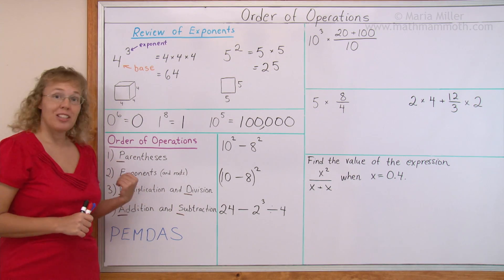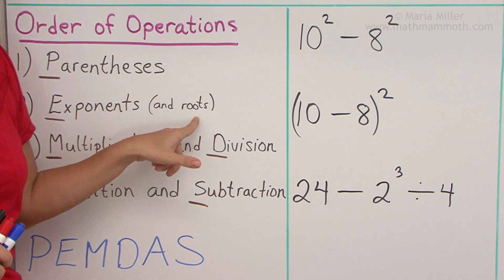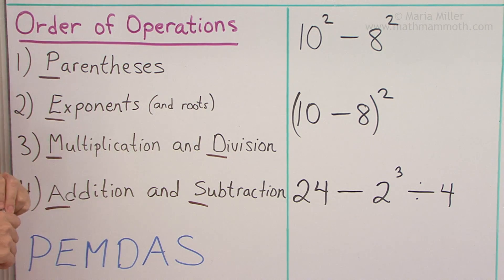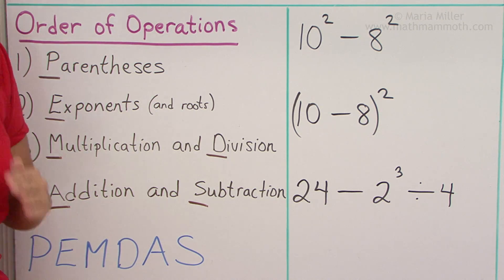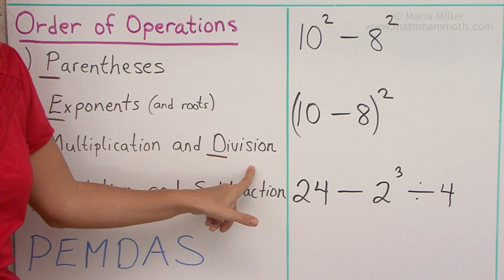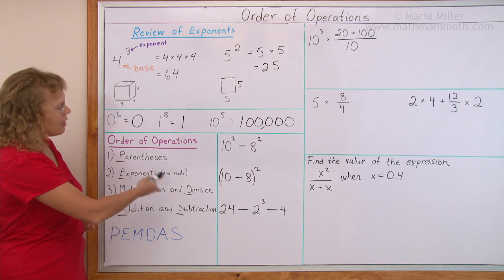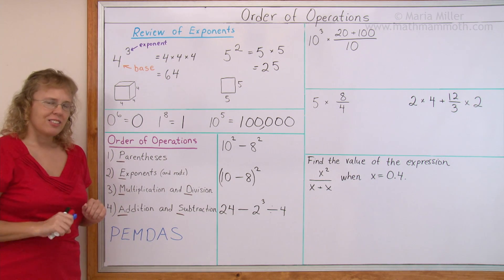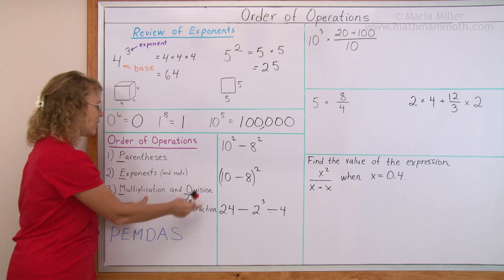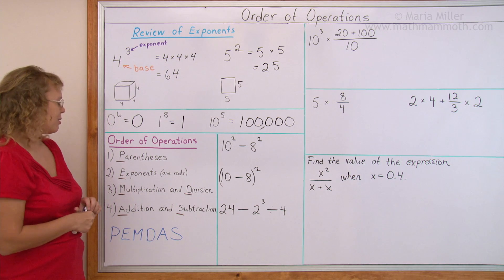I've written here the order of operations. First, we do anything within parentheses. Next come exponents and roots, like square roots — though we don't have any roots in this lesson. Third, multiplication and division — they are on the same level. This does not mean you do multiplications before divisions; they are equal priority. The general rule is to do multiplications and divisions from left to right. However, if your calculation only has multiplications and divisions, it actually doesn't matter — you can do divisions first or in whichever order you want.